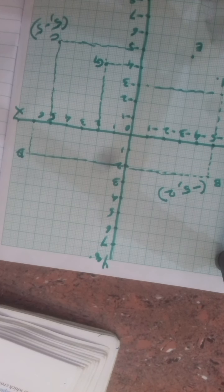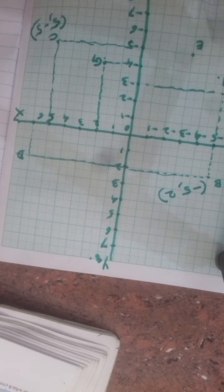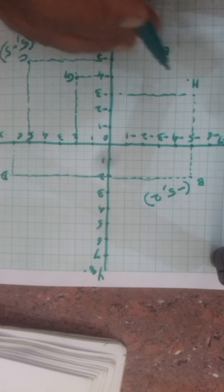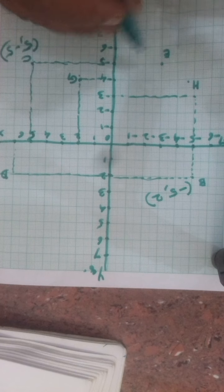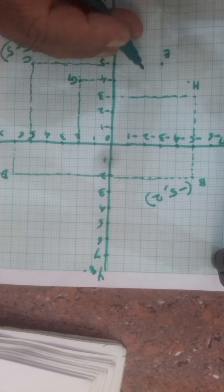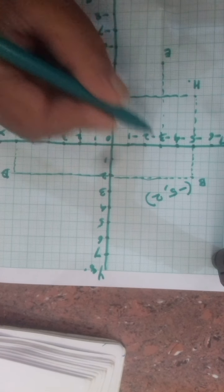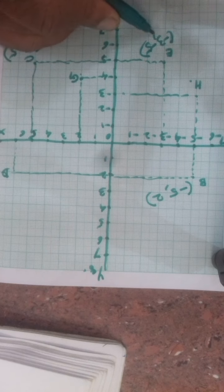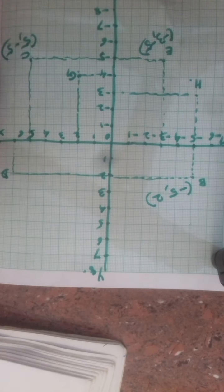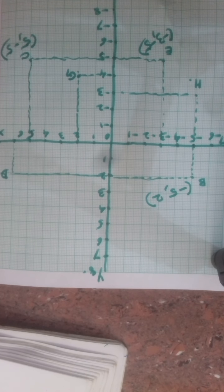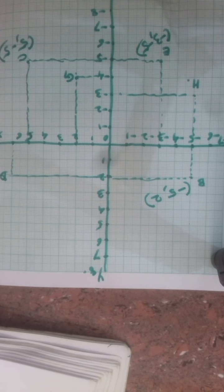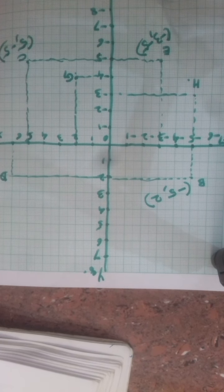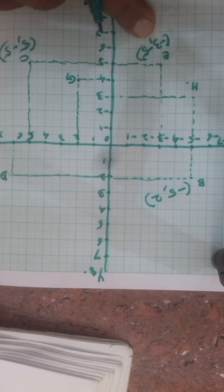The third question: which point is identified by the coordinates minus 3 comma minus 5? Looking at the figure, the point with x-coordinate minus 3 and y-coordinate minus 5 is point E. So the answer is: the point identified by minus 3 comma minus 5 is E.